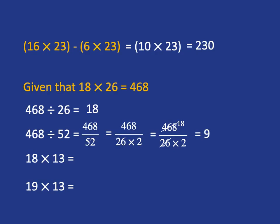What about 18 times 13? Well, here I'm noticing that I had 18 times 26, and now I'm going to 18 times 13. 26 is double 13, or 13 is half of 26. So 18 times 13 is just going to be half of 468, which is going to be 234.